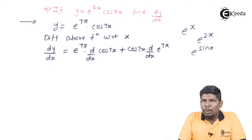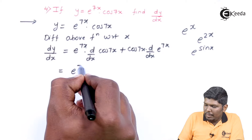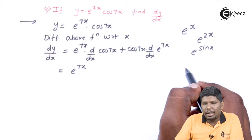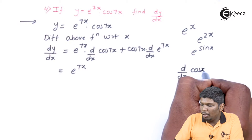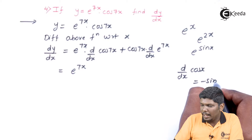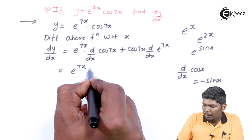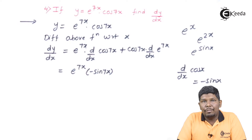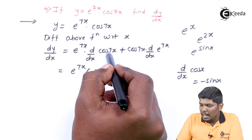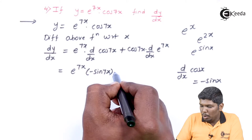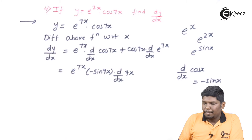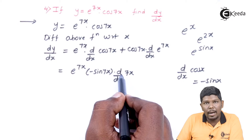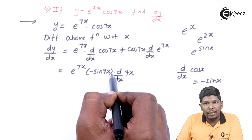How do we find the derivative of a composite function? e raised to 7x as it is. To find the derivative of cos 7x, we compare with the standard function: derivative of cos x is minus sin x. So the derivative of cos 7x gives minus sin 7x. Then we multiply by the derivative of the function replacing x — in this case x is replaced by 7x, so we multiply by the derivative of 7x. Derivative of cos 7x is minus sin 7x into derivative of 7x. U into derivative of v is ready.